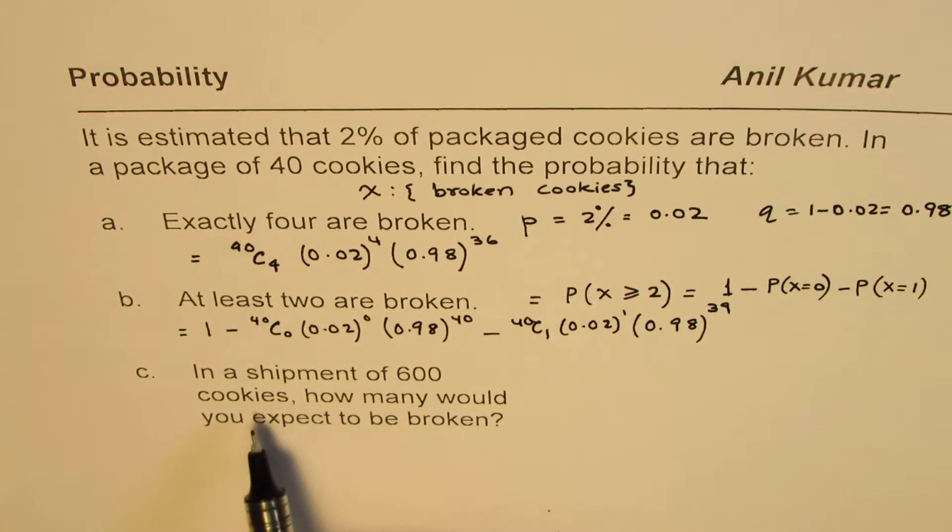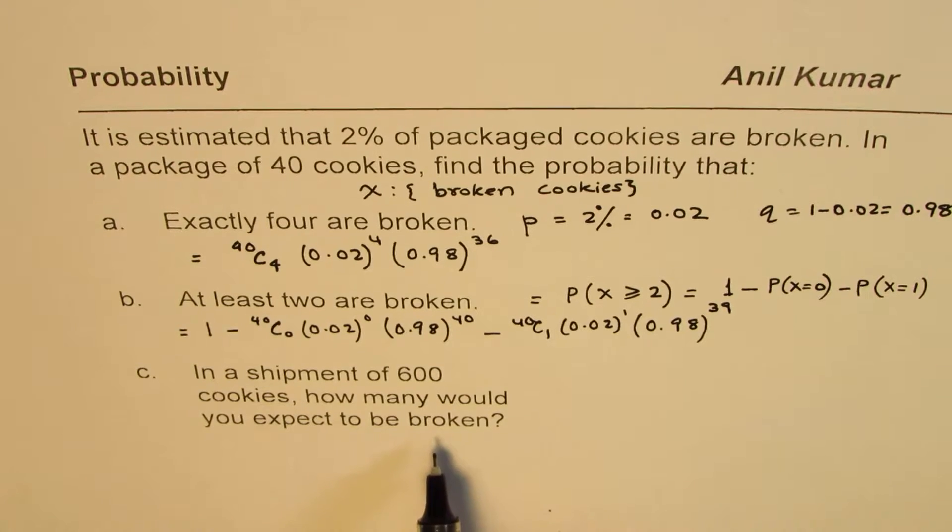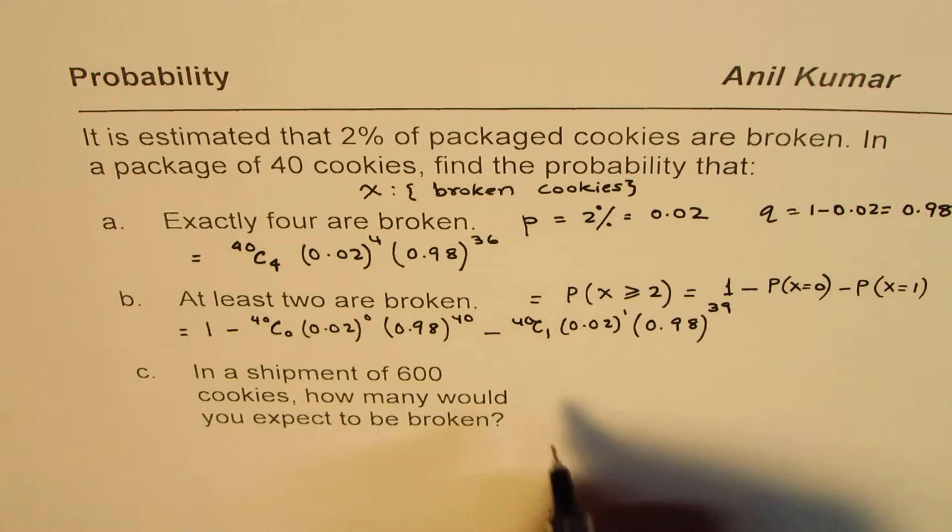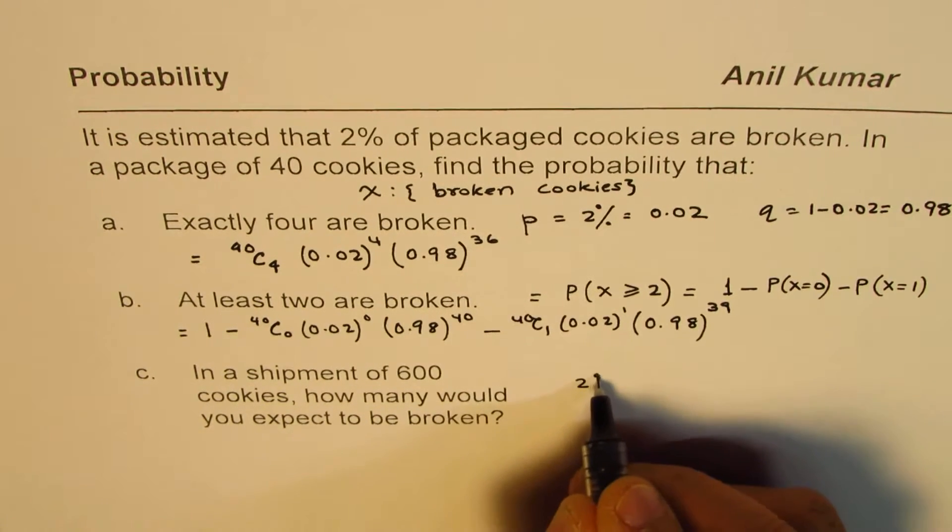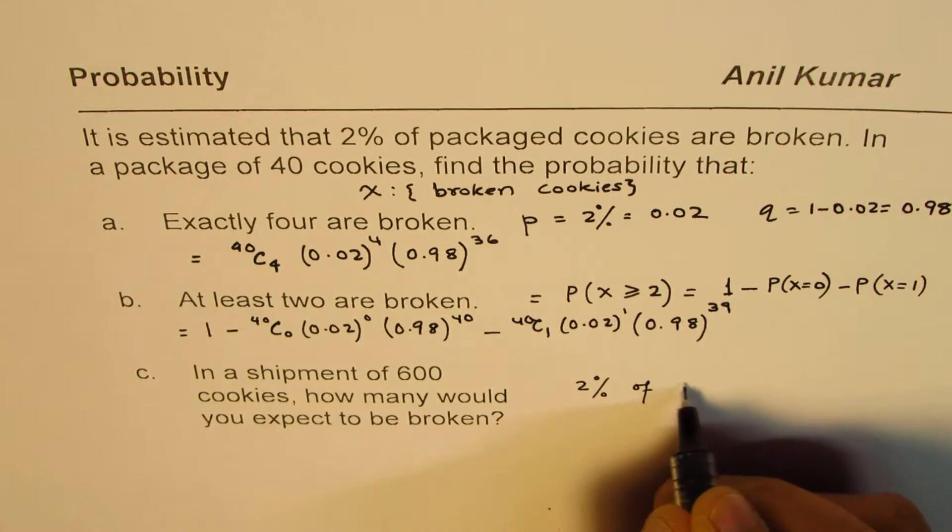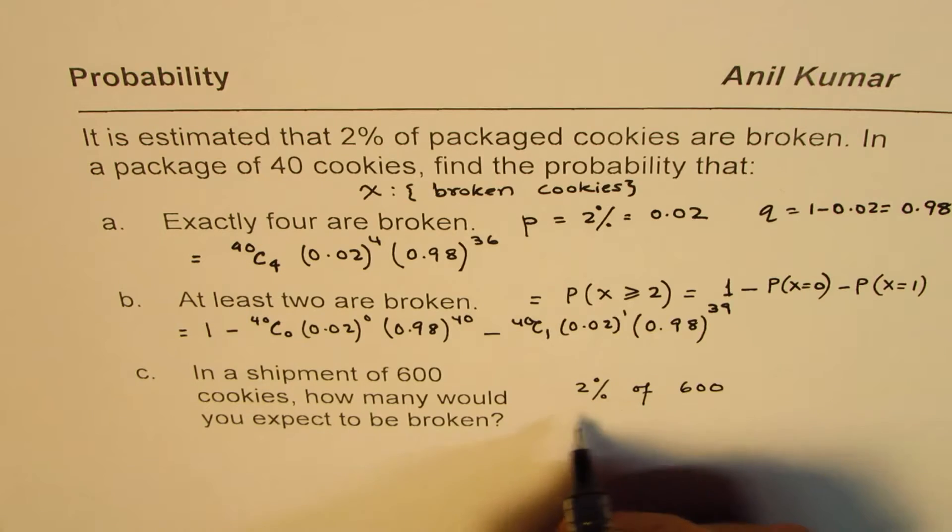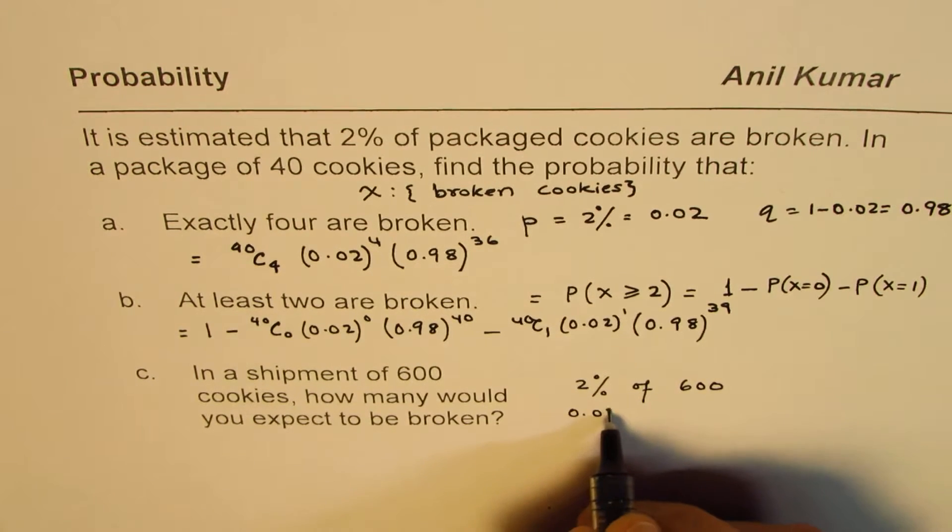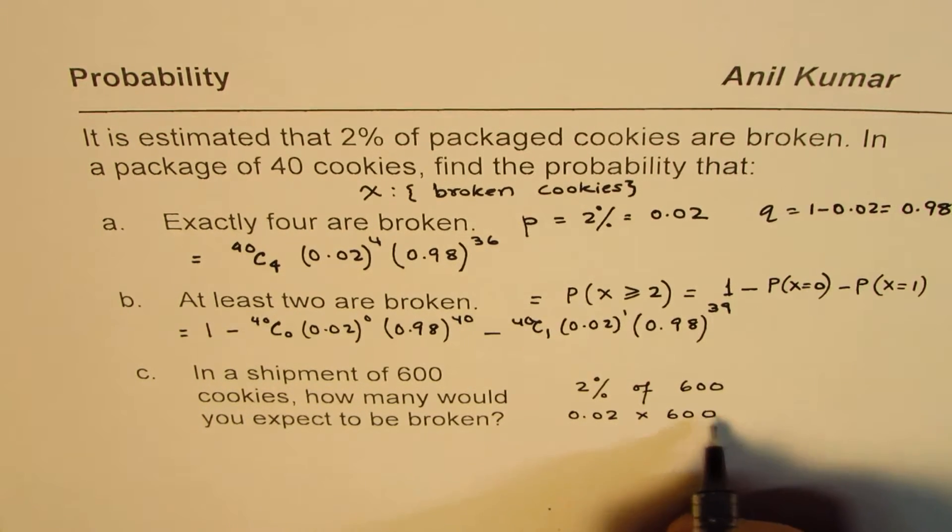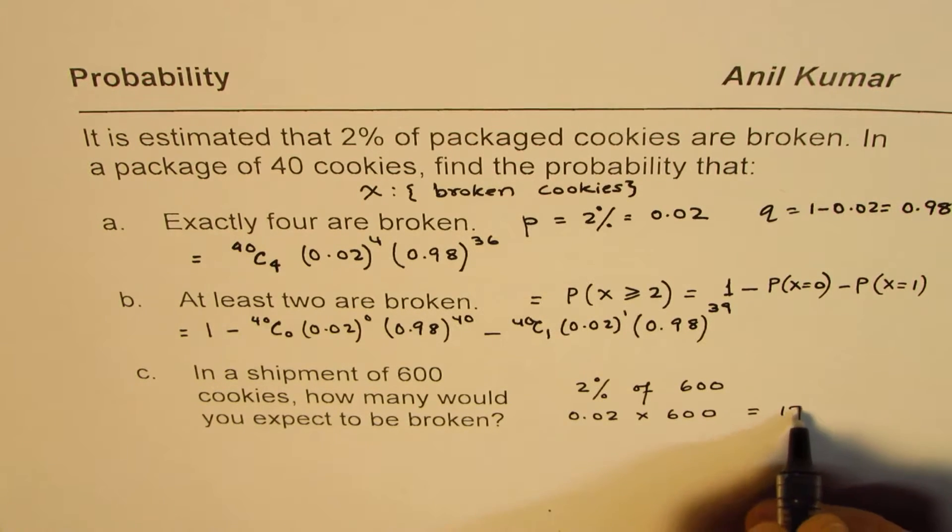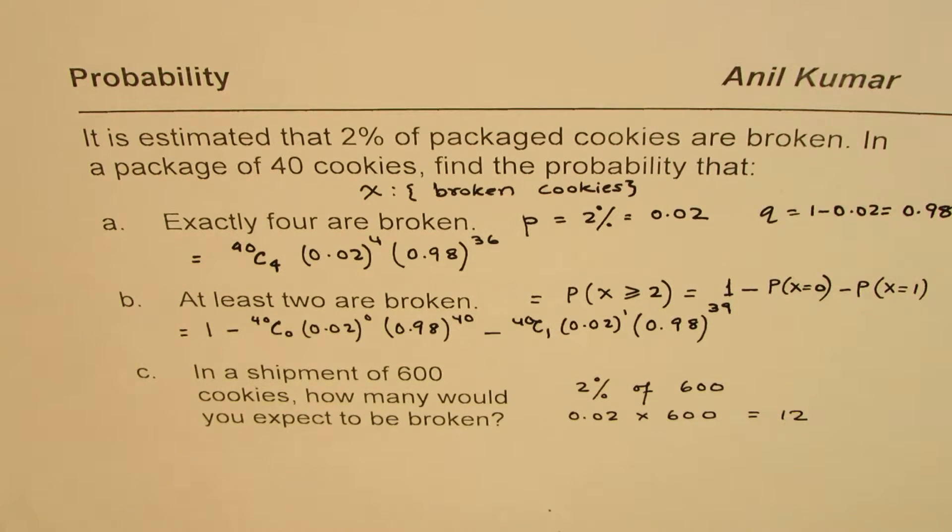In a shipment of 600 cookies, how many would you expect to be broken? It is 2%. So it is 2% of 600. That is what we expect. 2% of 600 means 0.02 times 600, which gives you 12. Like this, you can actually answer this question, and I hope that helps.